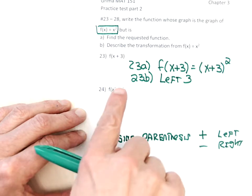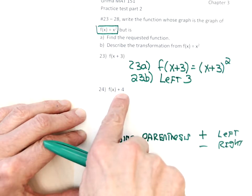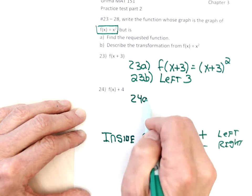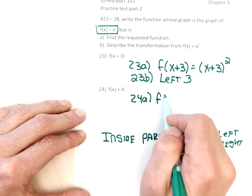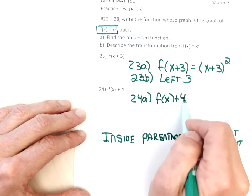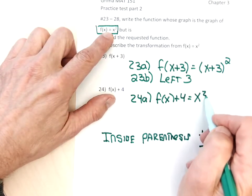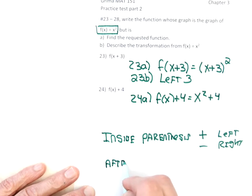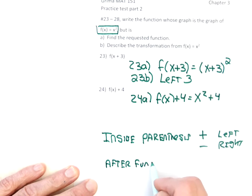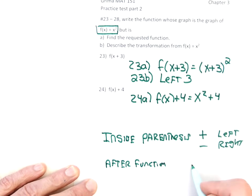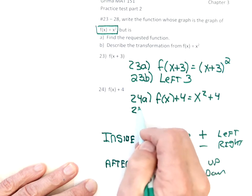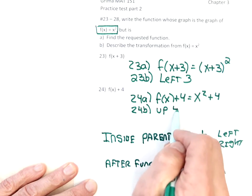For problem 24, since the plus 4 isn't in a parenthesis, I shouldn't get an x plus 4 in a parenthesis like in problem 23. To find each function, because the plus 4 is after the function, it's going to go after the x squared. In function notation, plus after the function moves it up, minus moves it down. To describe the transformation, that plus 4 is going to move it up 4.